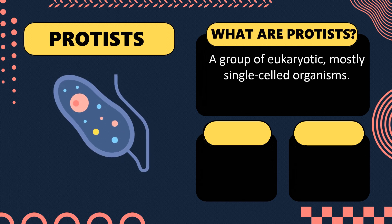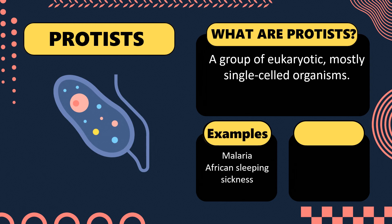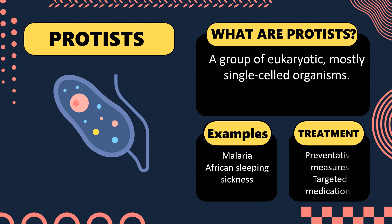The next type is protists. Protists are a group of eukaryotic organisms and are mostly single-cellular. Examples of diseases caused by them include malaria and African sleeping sickness. Treatment includes preventive measures and targeted medicines.